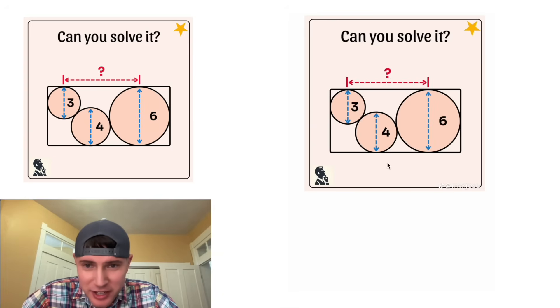Hey guys, this looks like a fun one. It's got a rectangle with three circles of diameter three, four, and six smushed in here. And we're supposed to find the distance from here to here.